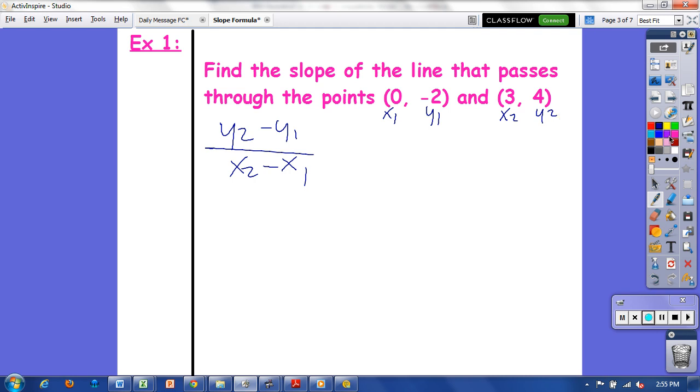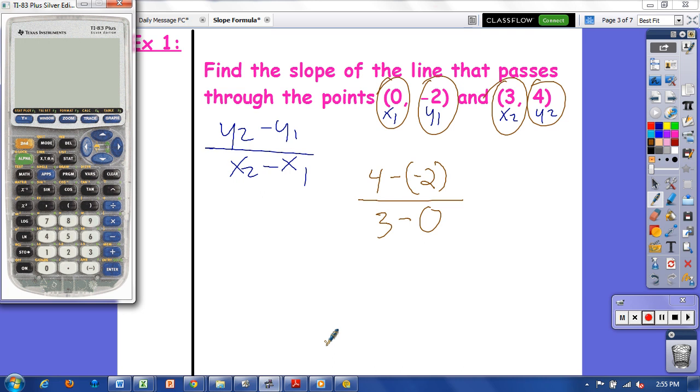My y₂ is 4, my y₁ is negative 2, so 4 minus negative 2 over my x₂ is 3, so 3 minus 0 which is my x₁.